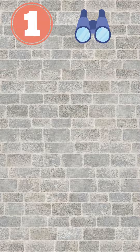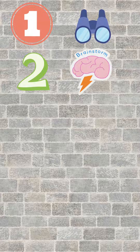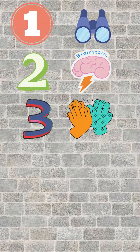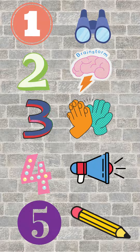As students are going through this strategy, the first thing they're going to do is look — look closely at the image. The second step is to think; we want to give them independent think time. Step three is to talk to a buddy, a partner, a table group. Step four is to share out to the whole class what students have observed.